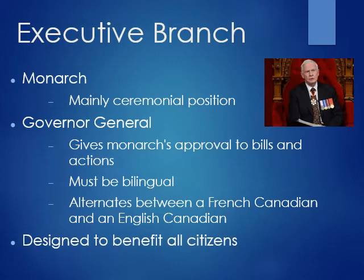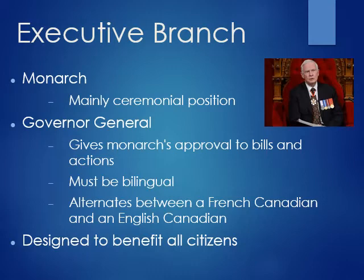The position of Governor General alternates back and forth between a French-Canadian person and an English-Canadian person. They are selected — not elected — by the monarch for a five-year term. One of the Governor General's major powers is that if the majority is not clear, or if a prime minister dies, or it's unclear who the majority party is, the Governor General gets to select who the Prime Minister is out of the House of Commons. The whole idea is that the executive branch is designed to balance the needs of both French and English Canadians.